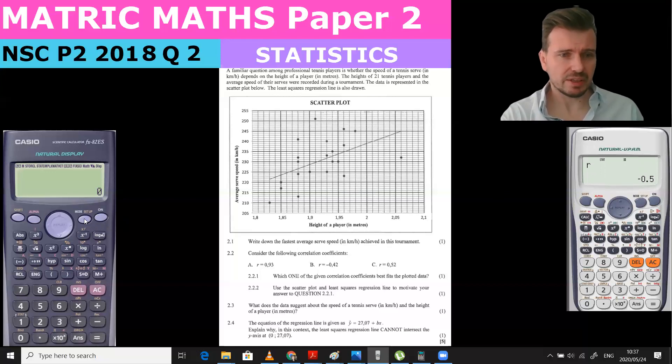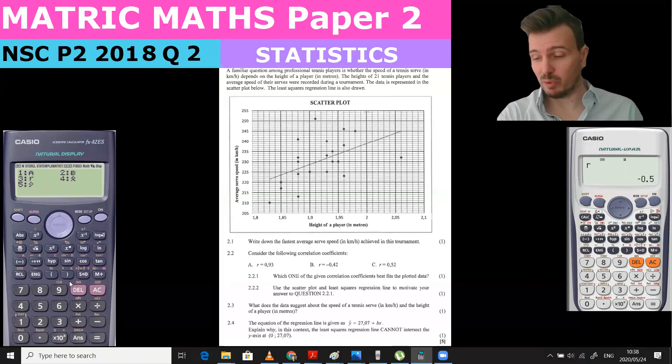Same thing on the other calculator, the fx-82 Casio. You would say stats, two variables, and again put in your data. Then we would say clear, shift stats, and then we go to seven which is our regression statistics. That's how you use your calculator but we don't need that here.